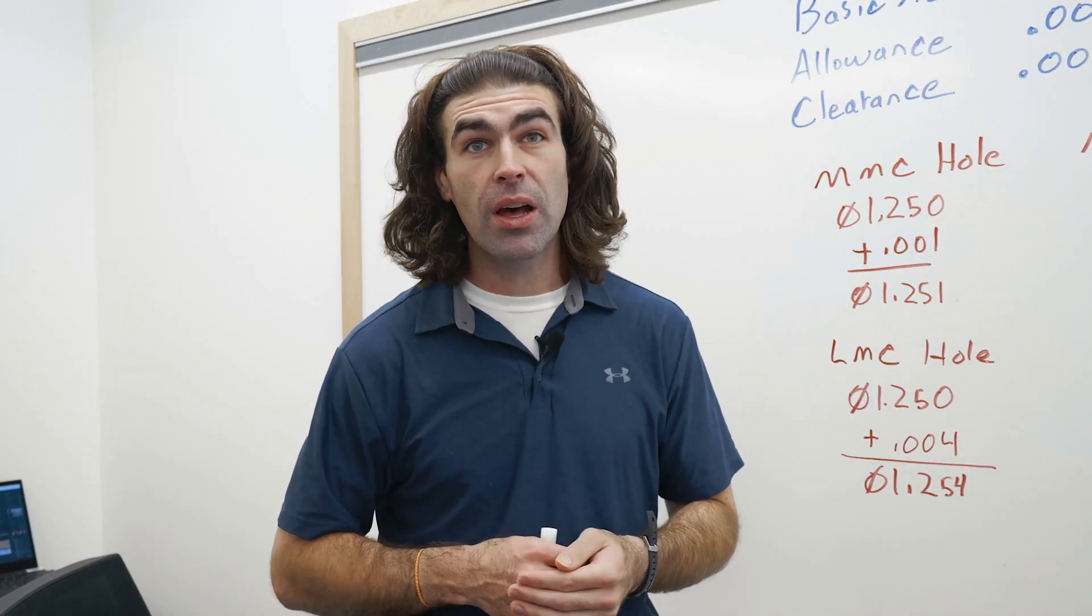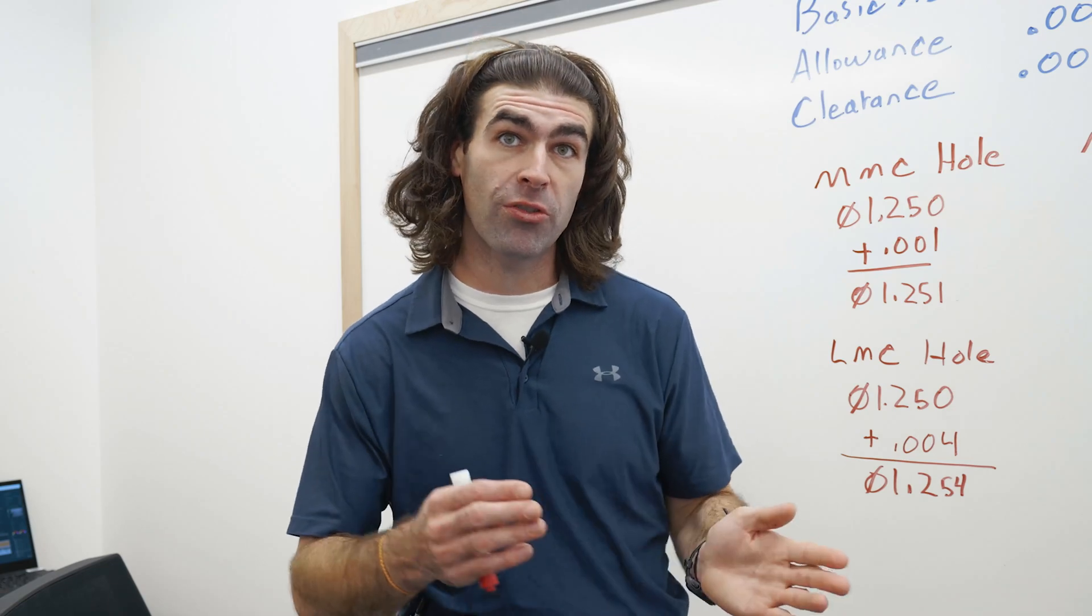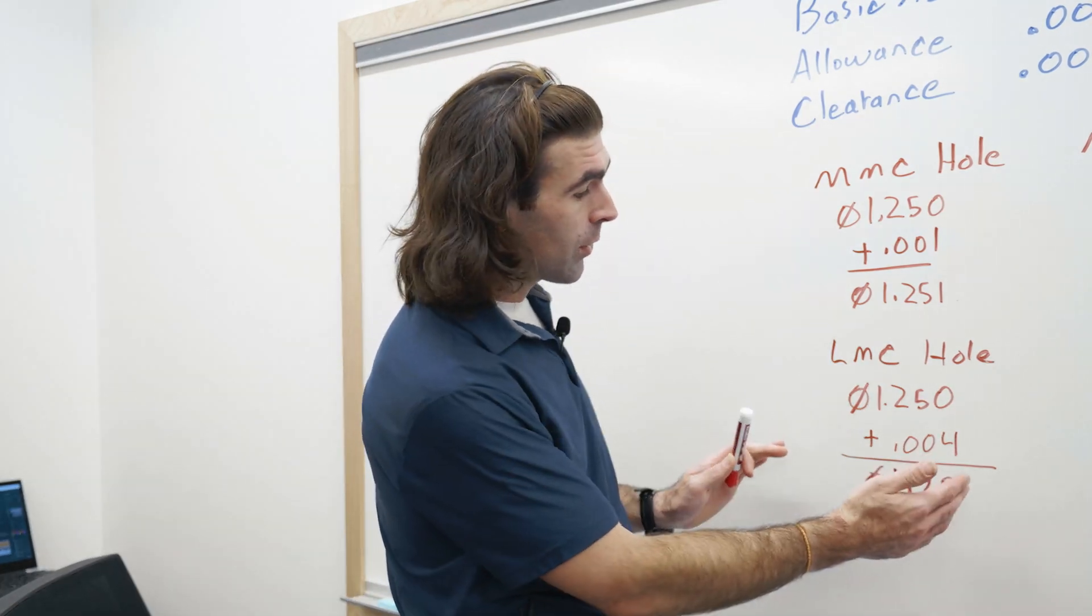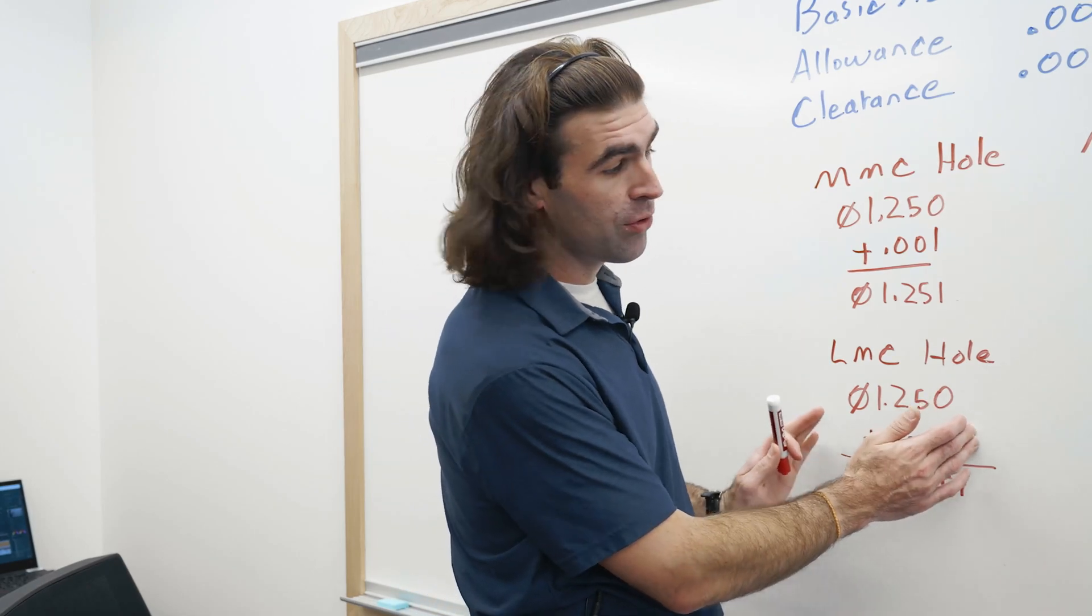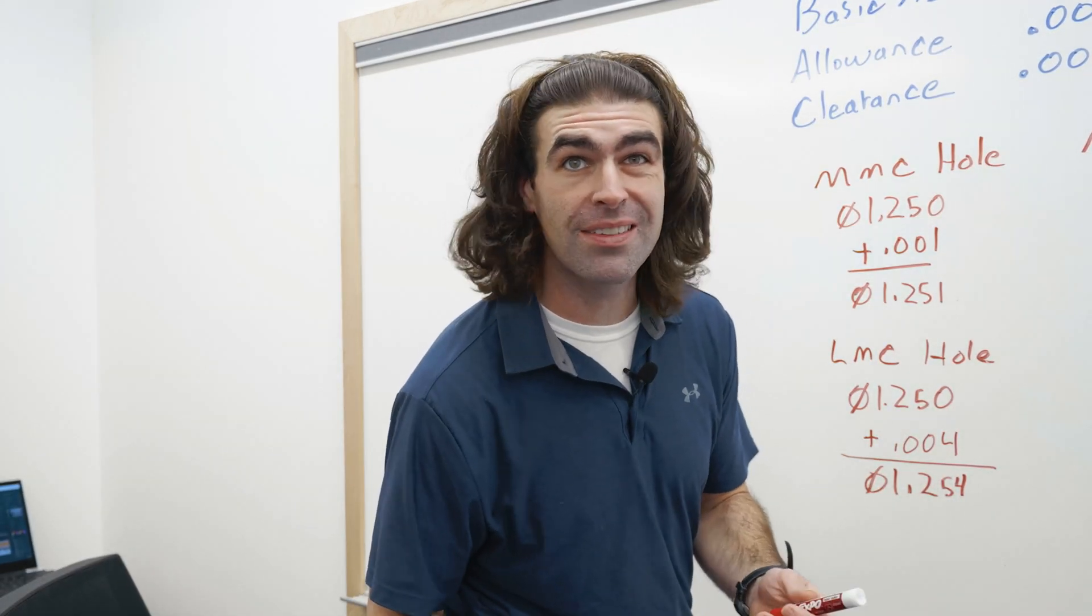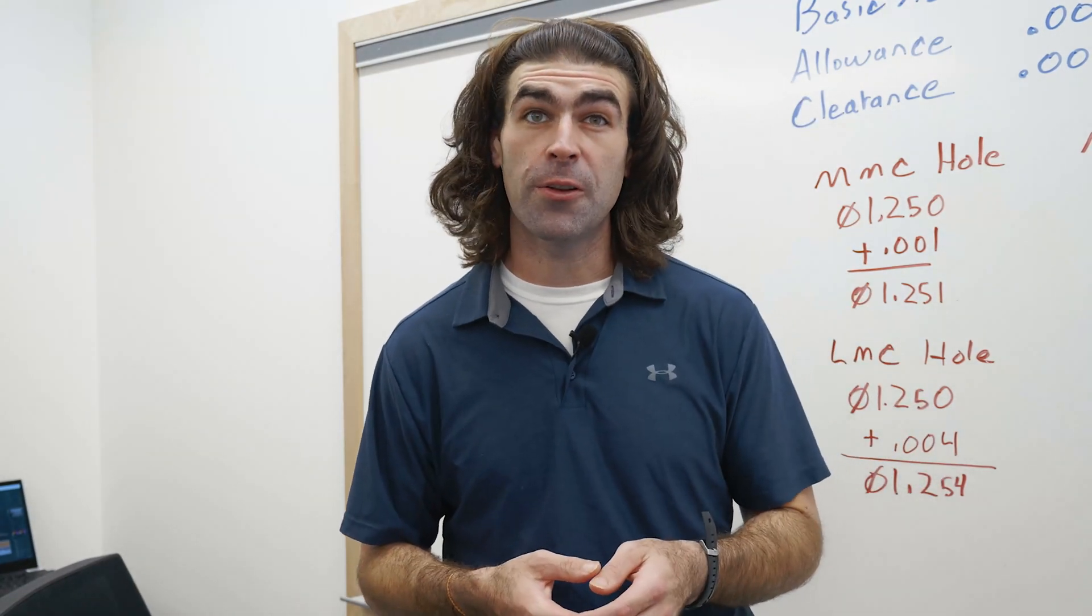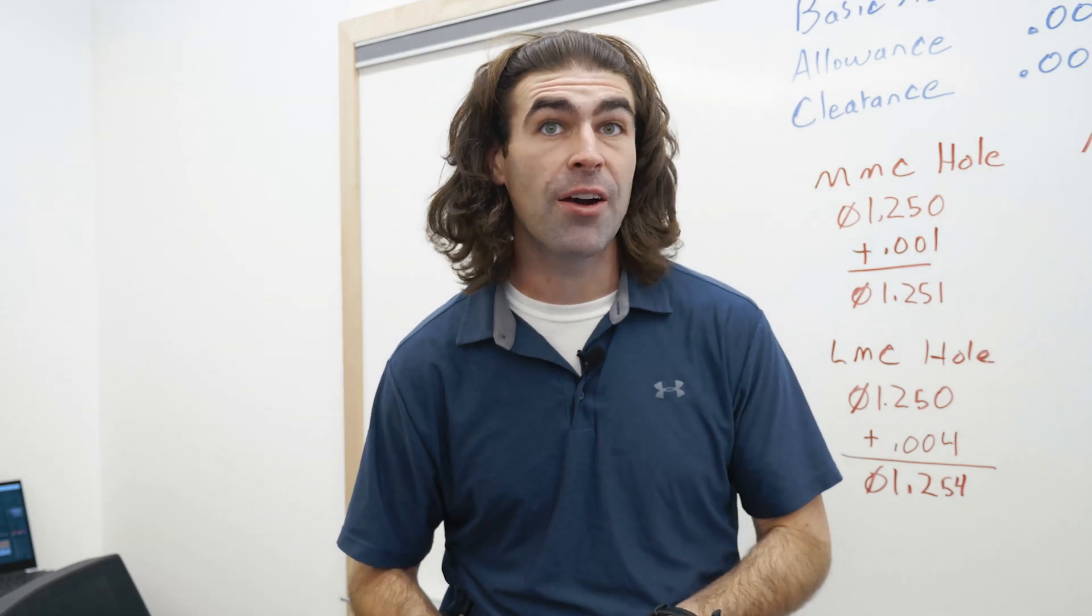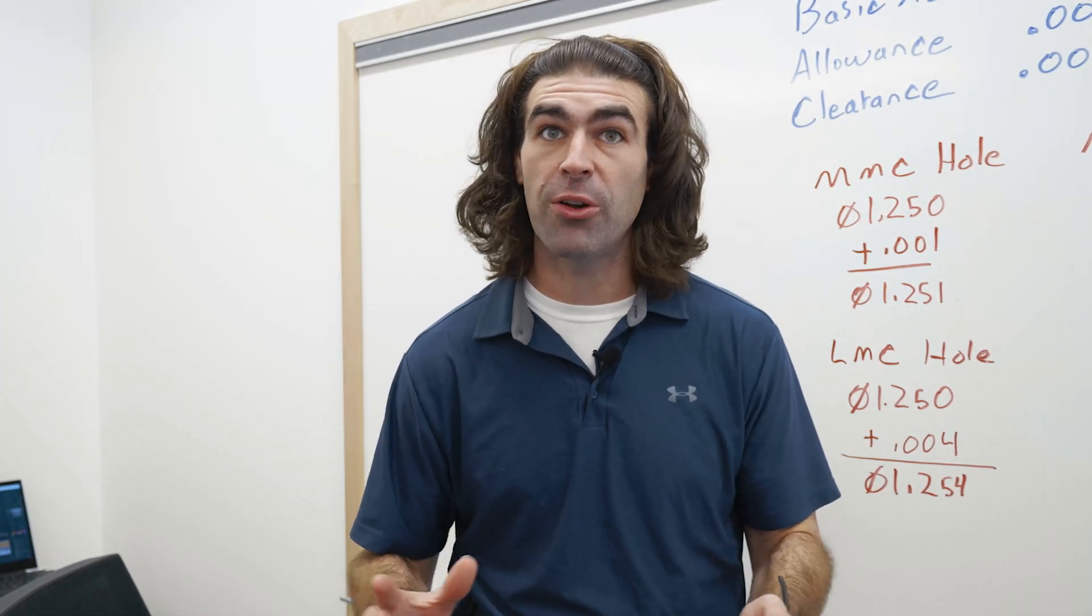Now we could change these numbers up if you needed to, if you needed to apportion a little bit more tolerance to one or the other. So in the case of the clearance, you could make this two and this six and end up with the same thing. So you might have to adjust these a little bit for standardized tooling, but that's basically how you can calculate fits without the table.